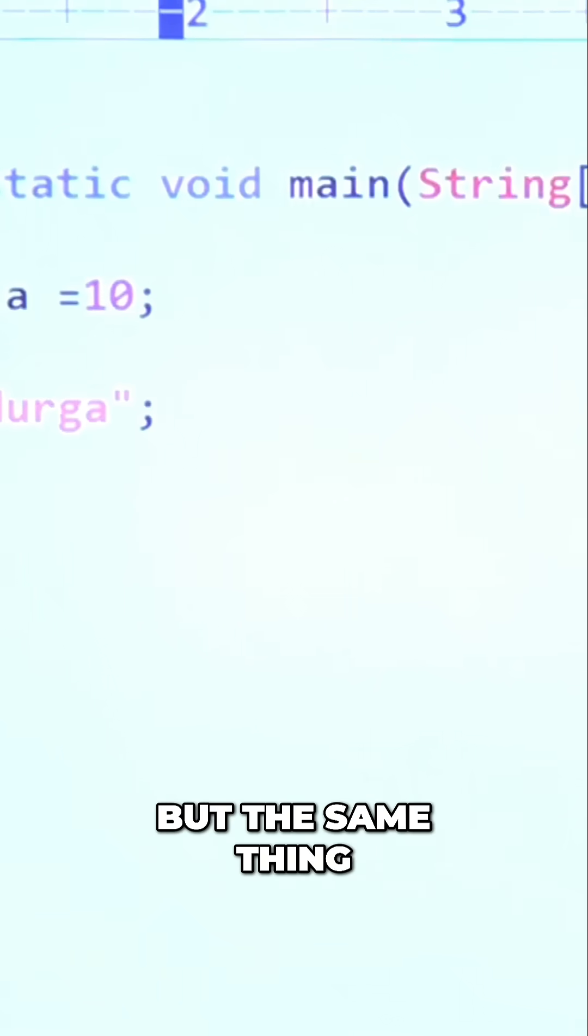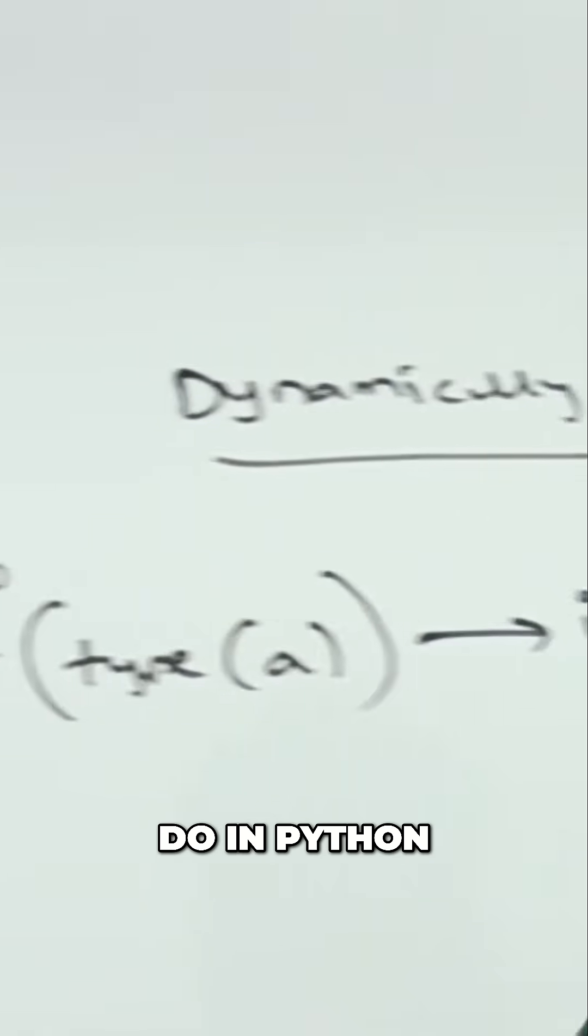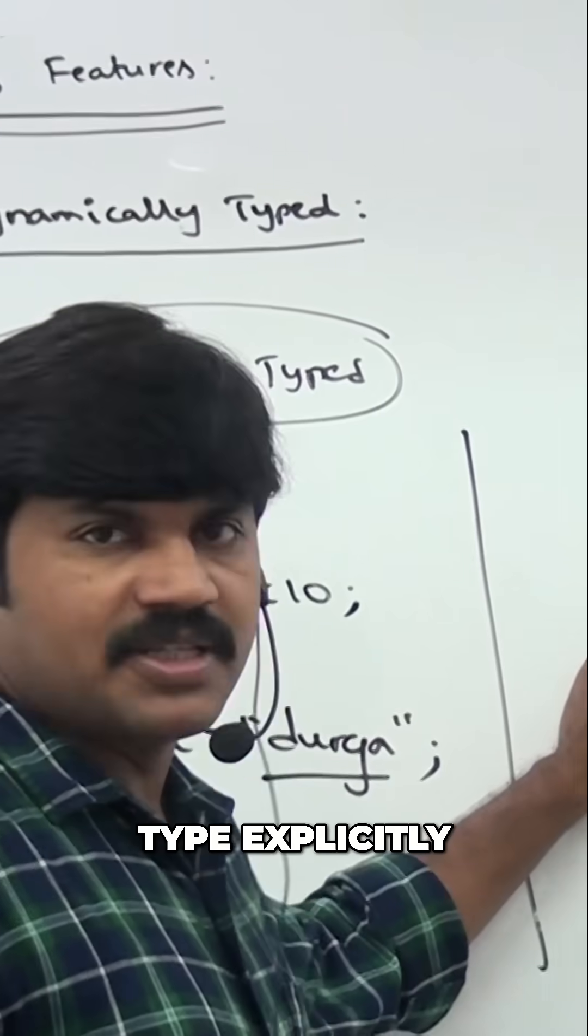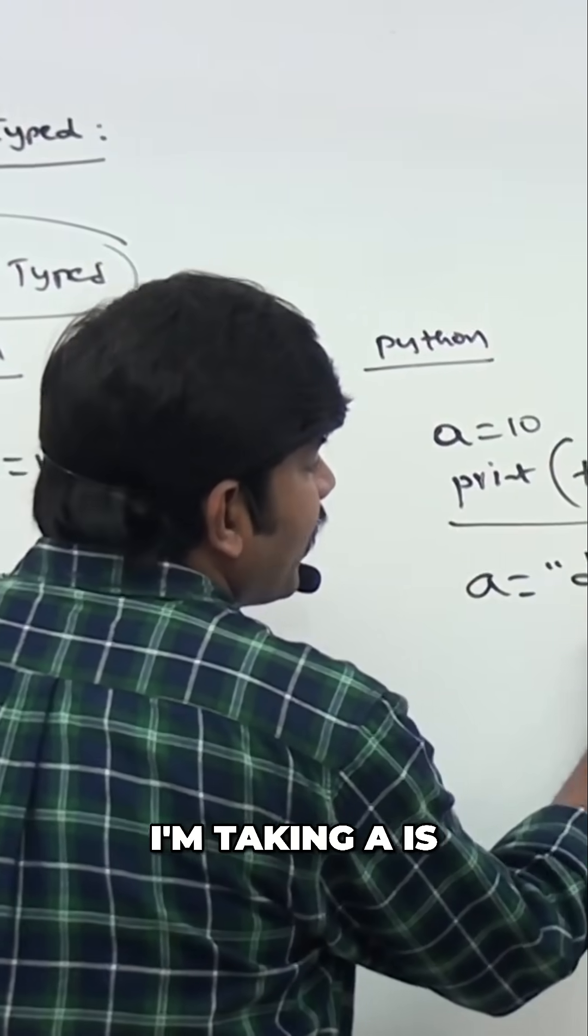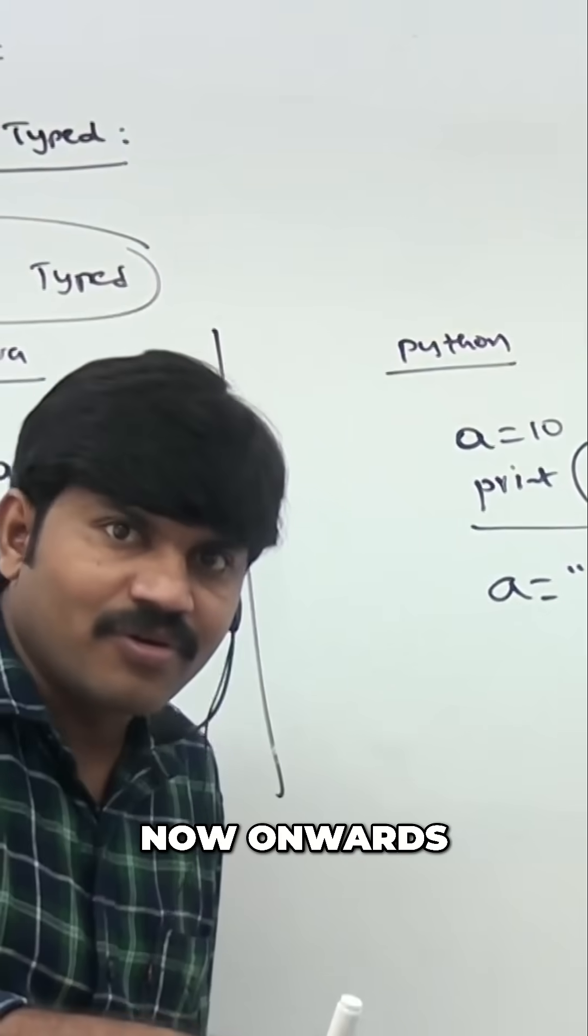But the same thing I want to do in Python - no problem at all. We didn't specify the type explicitly, sir. A equals 10, an int type. Next, in the next line, I'm taking a equals durga. A equals durga. Now onwards, a acts as string type.